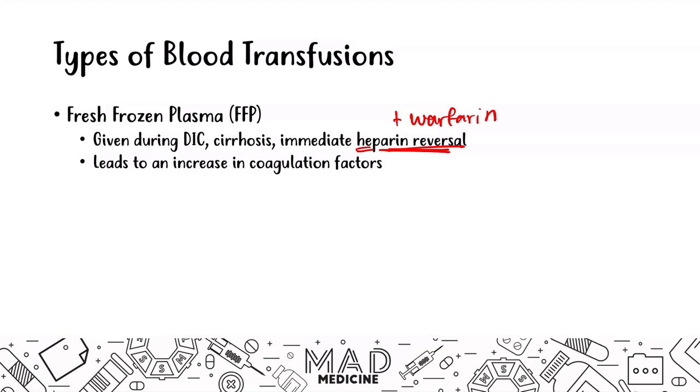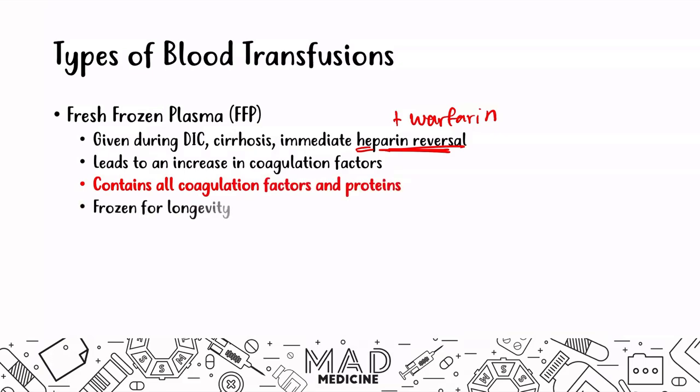FFP leads to an increase in coagulation factors because you are giving plasma containing all coagulation factors and proteins. It is frozen for longevity, but essentially you are giving a fresh transfusion of plasma with all coagulation factors and proteins. Note that if a patient is already in a hypercoagulable state, giving FFP may increase their ability to coagulate even further.